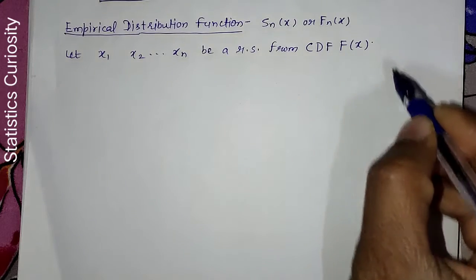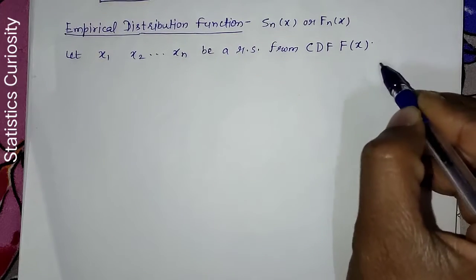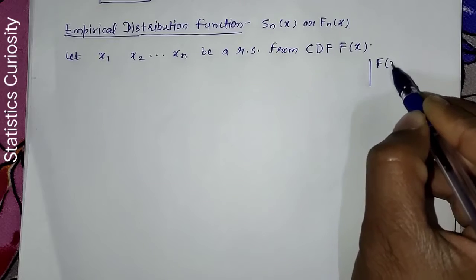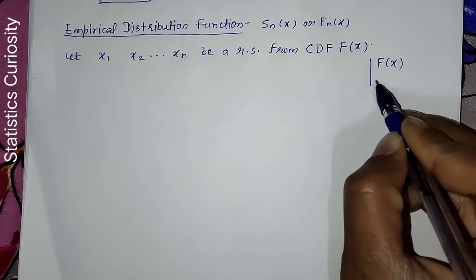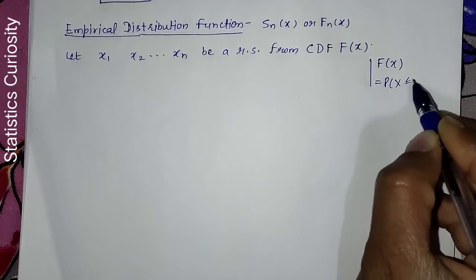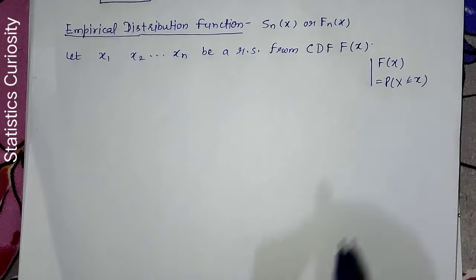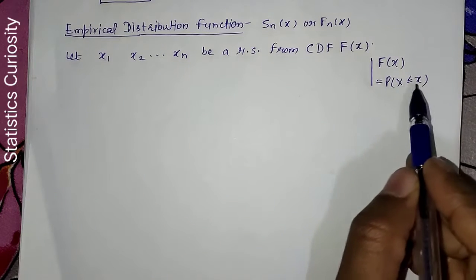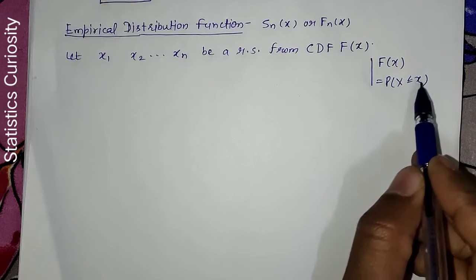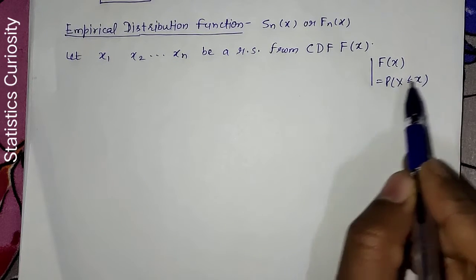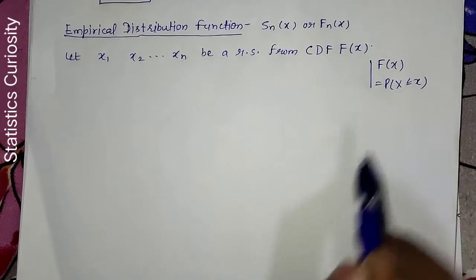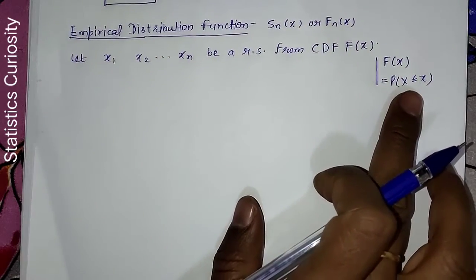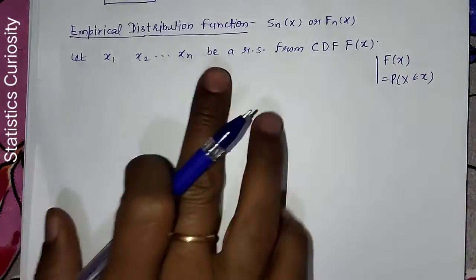If you want to know what capital F(x) is, I can say that capital F(x) is nothing but the probability of the random variable X being less than or equal to some value small x — that is, the cumulative probability up to a certain point. This is capital F(x).